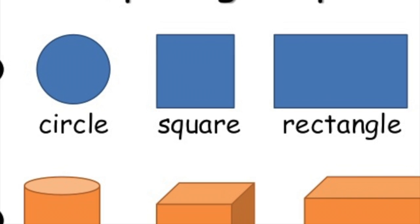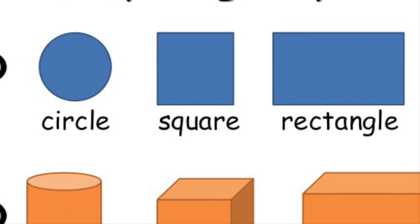Something that's flat, like a piece of paper, we call 2D or two-dimensional.